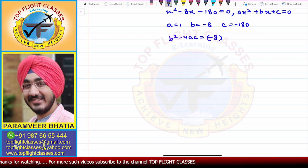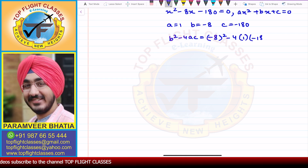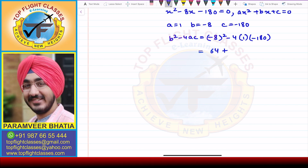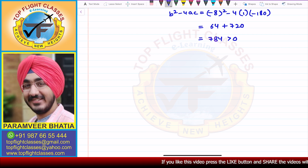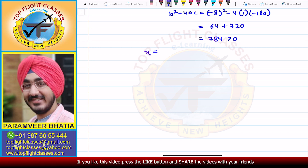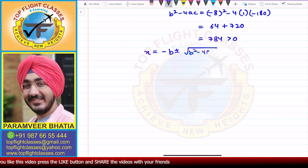Now I calculate the discriminant b² minus 4ac. That is (−8)² minus 4 × 1 × (−180), which gives 64 plus 720, equaling 784. Since b² − 4ac = 784, which is greater than 0, we proceed with the quadratic formula.